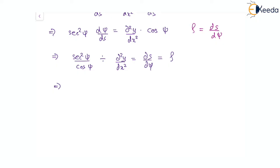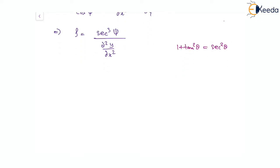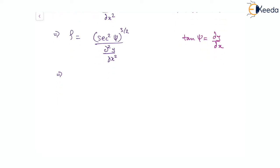So we can say that ρ is actually sec³ ψ — since 1/cos gives sec — divided by the second derivative of y with respect to x. Now, we know that 1 + tan² θ = sec² θ. So with this we can say that ρ will be (sec² ψ)^(3/2) divided by d²y/dx², and since tan ψ is dy/dx, this expression comes out to be ρ = (1 + (dy/dx)²)^(3/2) divided by d²y/dx².